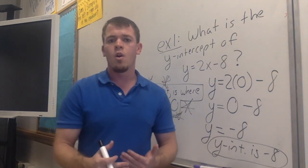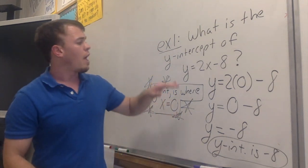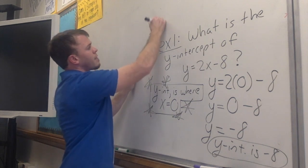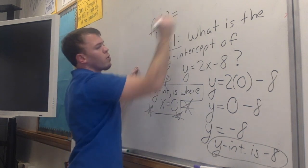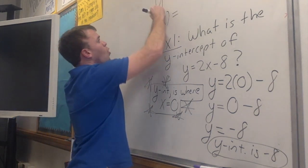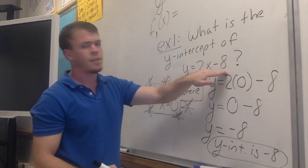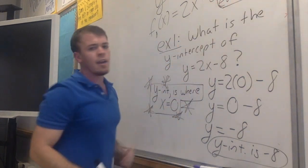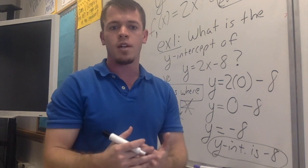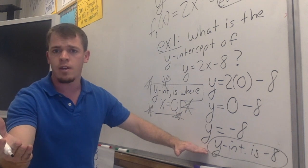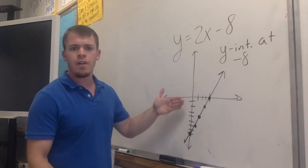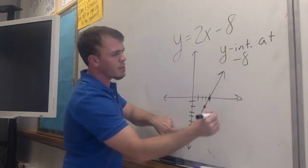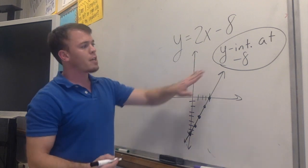Here's how to double-check this on your own. Go to the graphing function in your calculator and plug in y equals 2x minus 8. When you go to your calculator, it will show f1(x) equals — f1(x) is the same as saying y. So where it says f1(x), write 2x minus 8, hit enter, and look at that line on your graph to see if it actually crosses at negative 8. You should see your graph looks similar to mine — counting down 1, 2, 3, 4, 5, 6, 7, 8 — our y-intercept is at negative 8, and our graph matches the answer we got algebraically.